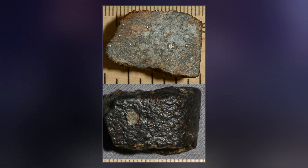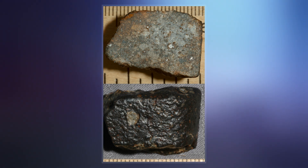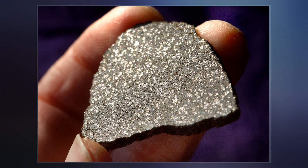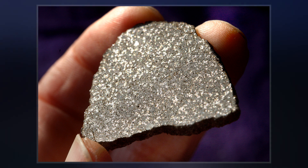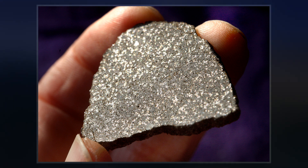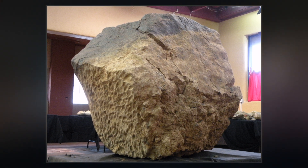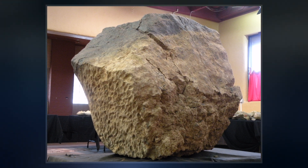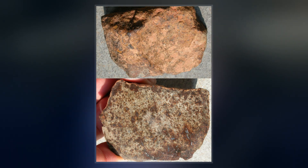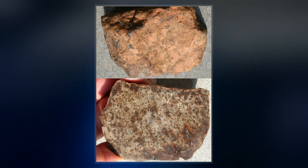A probable parent body for this group is the S-type asteroid 6-Hebe, with less likely candidates being 3-Juno and 7-Iris. It is supposed that these meteorites arise from impacts onto small near-Earth asteroids broken off from 6-Hebe in the past, rather than originating from 6-Hebe directly.